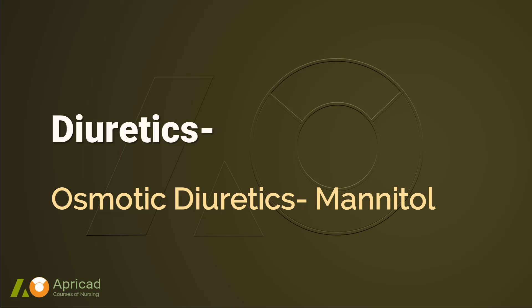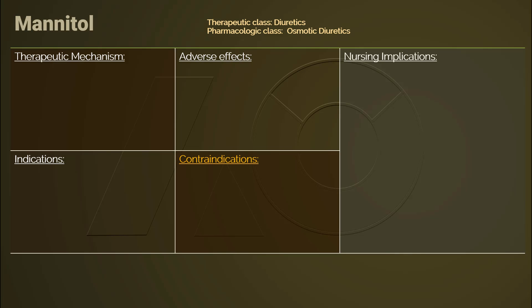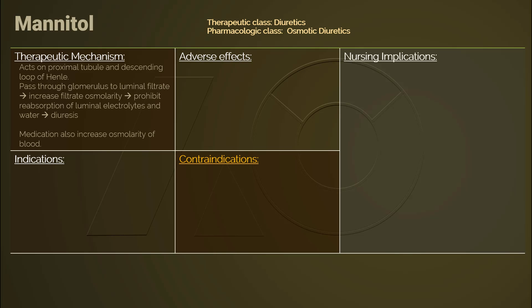Mannitol is not for long-term use. Given intravenously, mannitol is a temporary therapy for acute and serious conditions. It belongs to the therapeutic class of diuretics. Mannitol passes through the glomerulus, increasing osmolarity of the filtrate in the proximal convoluted tubule and descending loop of Henle, and it actually increases osmolarity in both the blood and luminal fluid.